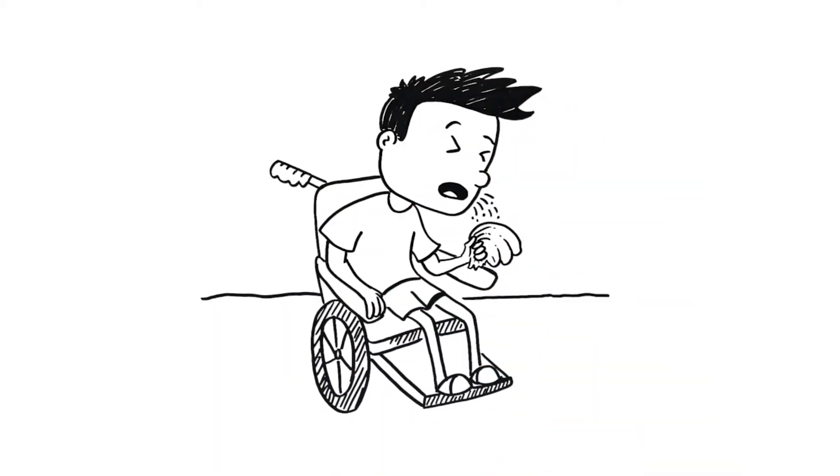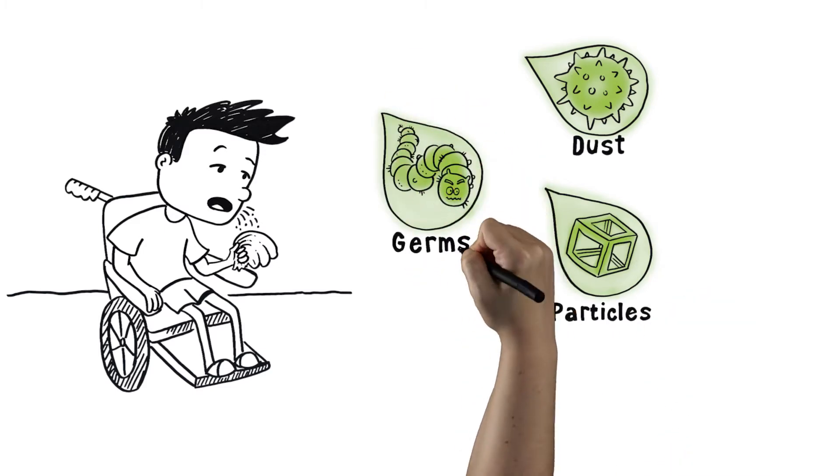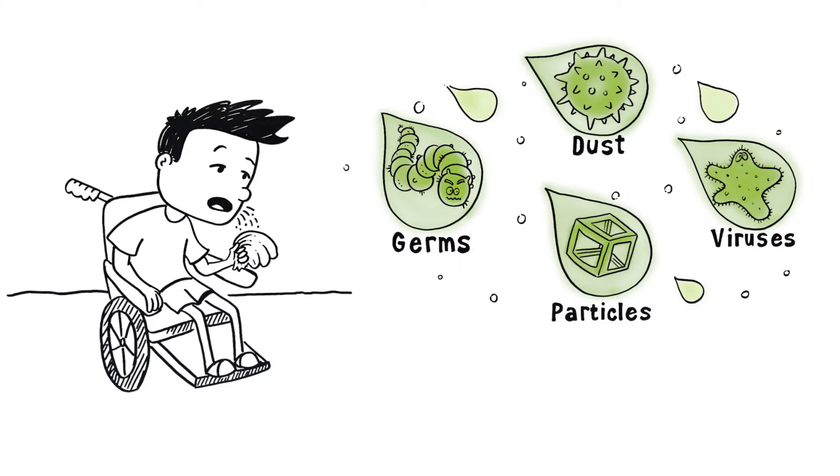Coughing is very important, especially if you have Duchenne muscular dystrophy. Your lungs produce mucus to trap the dust and particles you normally breathe in every day. Coughing is the way you remove the mucus from your lungs.